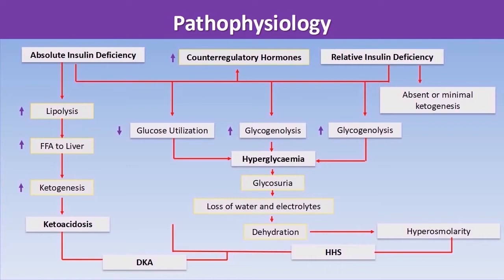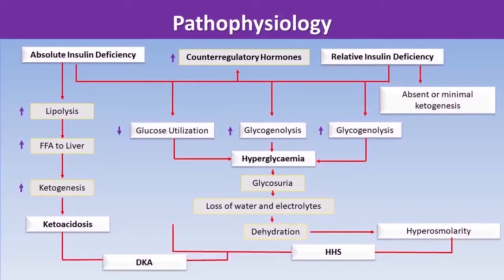When either of these occur in combination with an increase in counter-regulatory hormones such as cortisol, catecholamines, or growth hormones, it leads to a cascade of events. The common pathophysiological processes between DKA and HHS include increased gluconeogenesis, increased glycogenolysis, and decreased glucose utilization, ultimately giving rise to the hyperglycemic state.